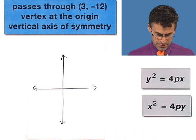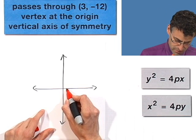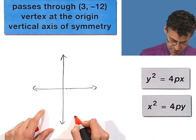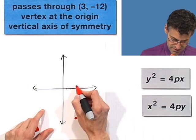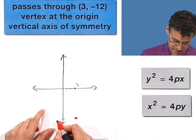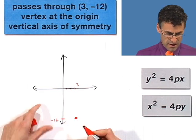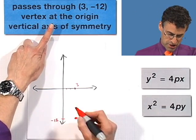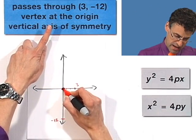Passes through the point 3 comma negative 12. Now where in the world is that? 3 comma negative 12. 1, 2, 3 comma negative 12. That's way down here. So that's 3 comma negative 12.